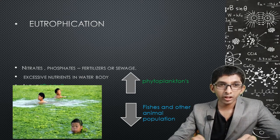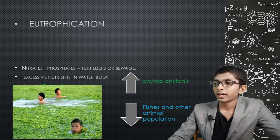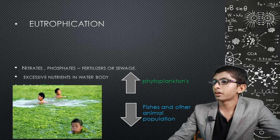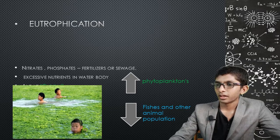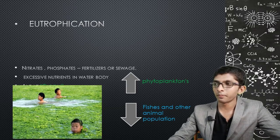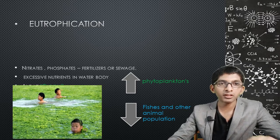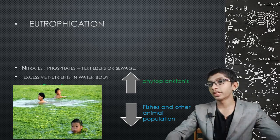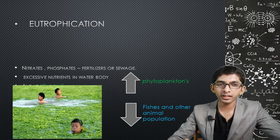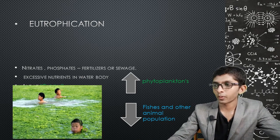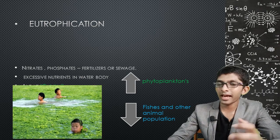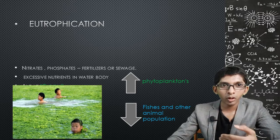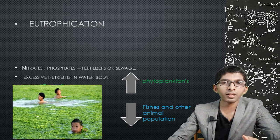Excess nutrients in the water cause algae bloom — a rapid overgrowth of algae. Algae bloom leads to overcrowding of algae in the water, blocking sunlight from reaching phytoplankton below. The algae consume excessive nutrients, outcompeting phytoplankton, which are responsible for producing more than 50% of the Earth's oxygen.